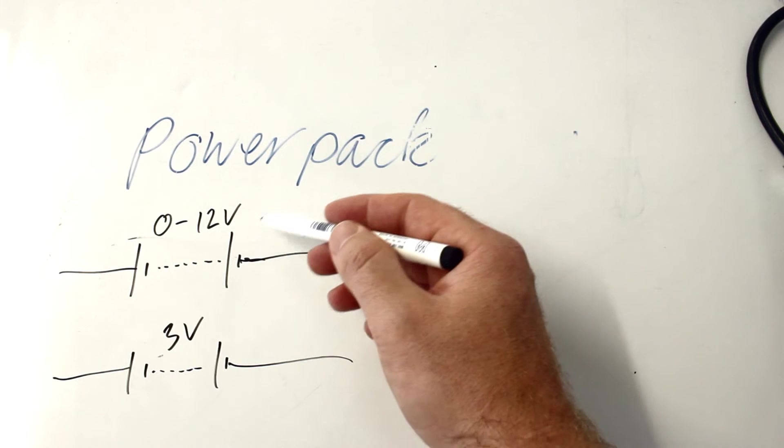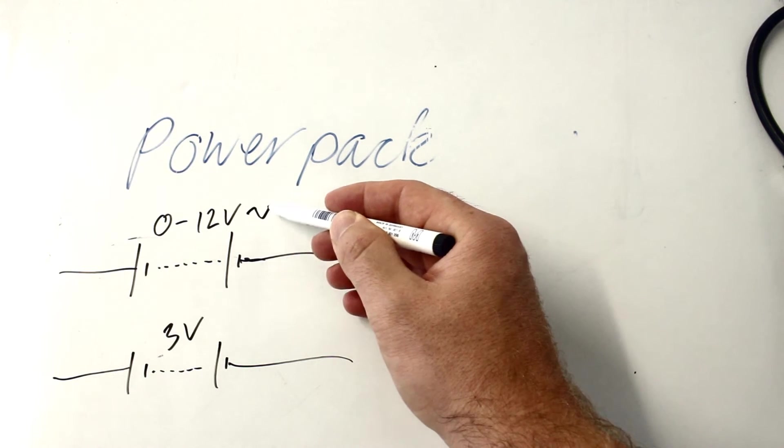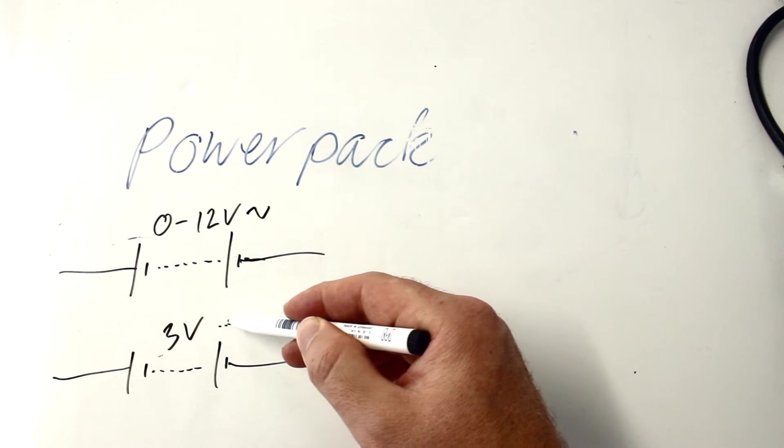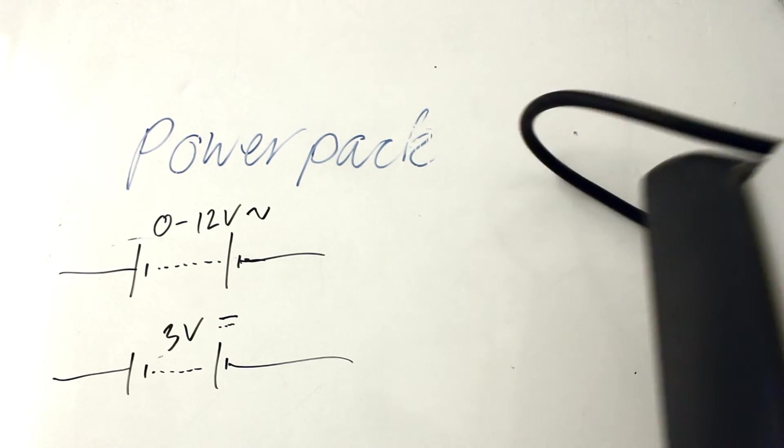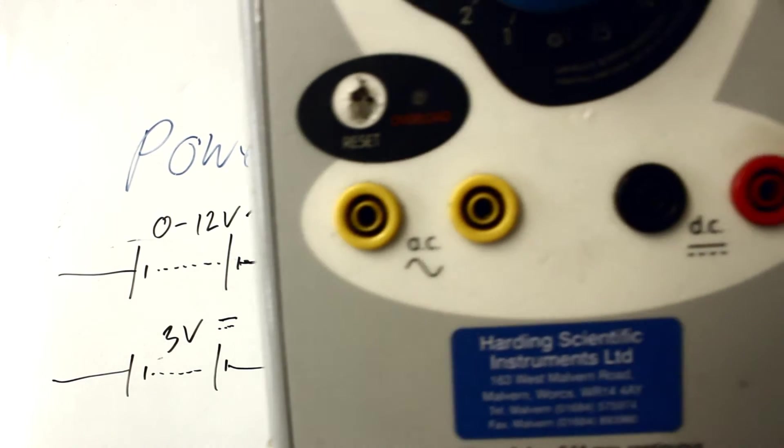And if you wanted to be using the AC side, a little squiggle. If you wanted to be using the DC side, you could put the little DC symbol as well. Just so people know which side of the power pack to plug it in. You see those symbols on there as well. AC and DC.